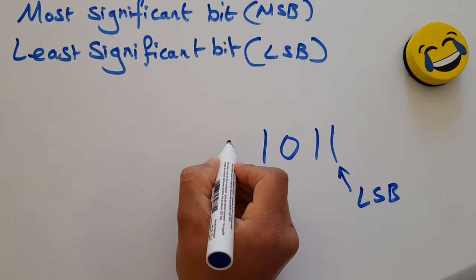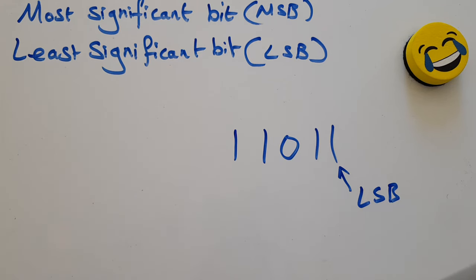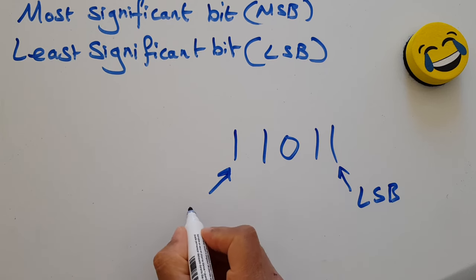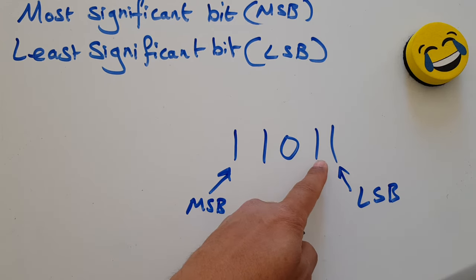What if I've got another bit? Where's the MSB now? Well the most significant bit now is here. It's still the one on the furthest left. What's it worth now? Because before it was 8. 1, 2, 4, 8. It's now worth 16.